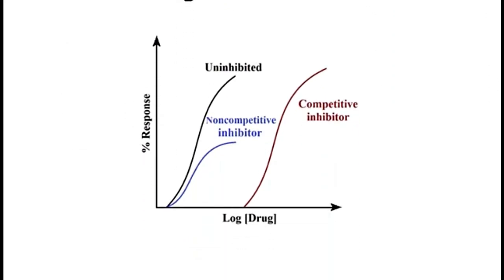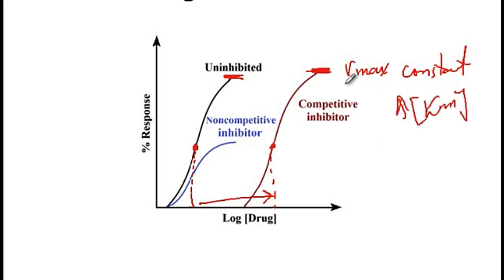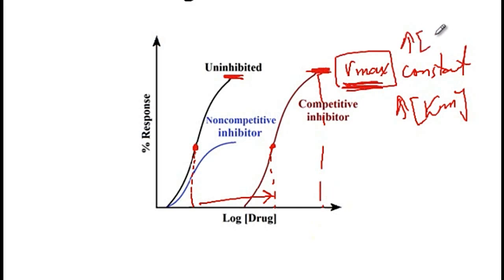Here I have a curve which allows me to describe the Vmax and Km changes with non-competitive and competitive inhibitors. The black line represents the uninhibited enzyme — no inhibitor added. With a competitive inhibitor, you can see that we can still reach the Vmax, so Vmax remains constant. However, the concentration of substrate needed to reach half the Vmax has increased, so Km has increased. To reach Vmax, we need a much higher substrate concentration.